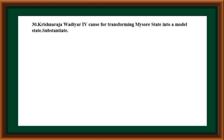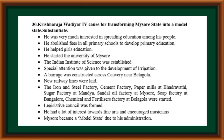Krishna Raja Wadiyar IV — causes for transforming Mysore state into a model state. He spread education, abolished fees in primary schools, helped girls' education, and started the University of Mysore. The Indian Institute of Science was established. A barrage was constructed across Cauvery near Bellagula; new railway lines were laid. Iron and steel factory, cement factory, paper mills at Bhadravati, sugar factory at Mandya, sandalwood oil factory at Mysore, soap factory at Bangalore, and chemical and fertilizer factory at Belagola were started. A Legislative Council was formed; he encouraged fine arts and musicians. Mysore became a model state under his administration.